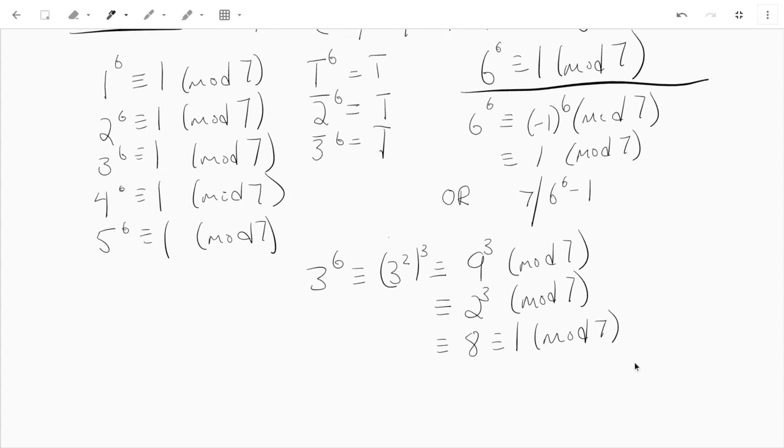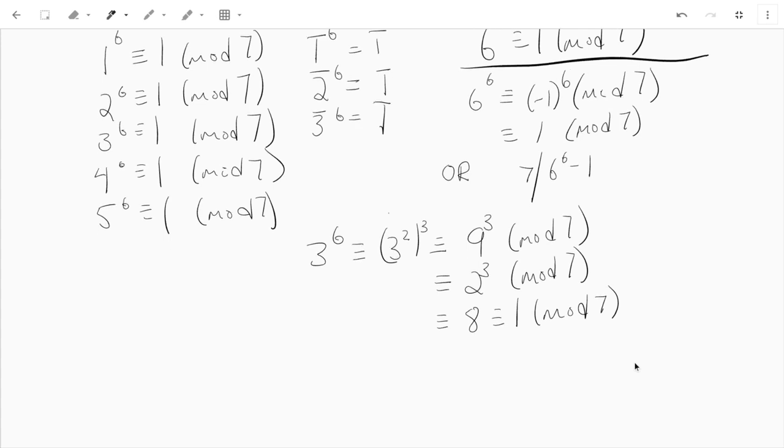And if you find that a bit tricky, maybe try something like, what about mod 11? Try 4 to the tenth. Let's try that. Well, that's just 16. So it's 4² to the fifth power, that's 16 to the fifth power. That's really 5 to the fifth power.